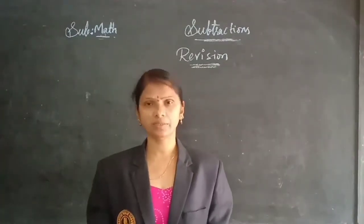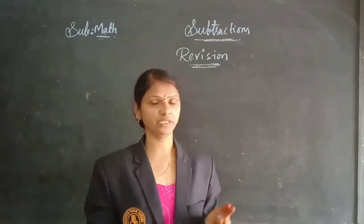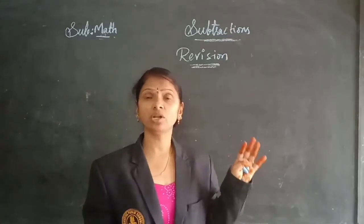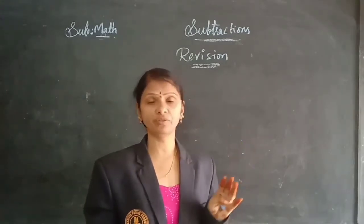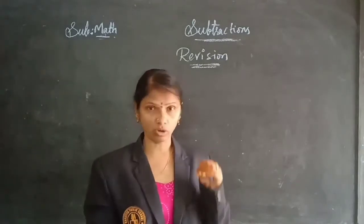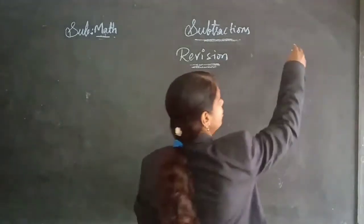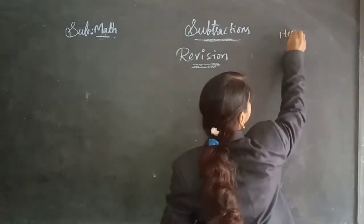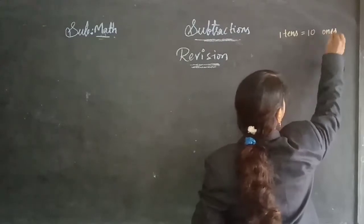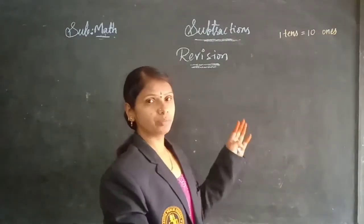Children, before doing the subtractions, something you have to know — already I told you in the previous videos also. When you are doing subtraction, always you need to take the bigger number first in the first place and take the smaller number in the second place. And also, when you are taking the borrows, one ten is equals to ten ones. When you are taking the borrow from tens to ones, one ten you are shifting — that is equals to ten ones.